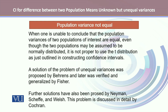Because even though the two populations may be assumed to follow a normal distribution, it is not proper to use the t-distribution as just outlined in constructing confidence intervals. The solution for unequal variances was proposed by Behrens and later verified and generalized by Fisher.